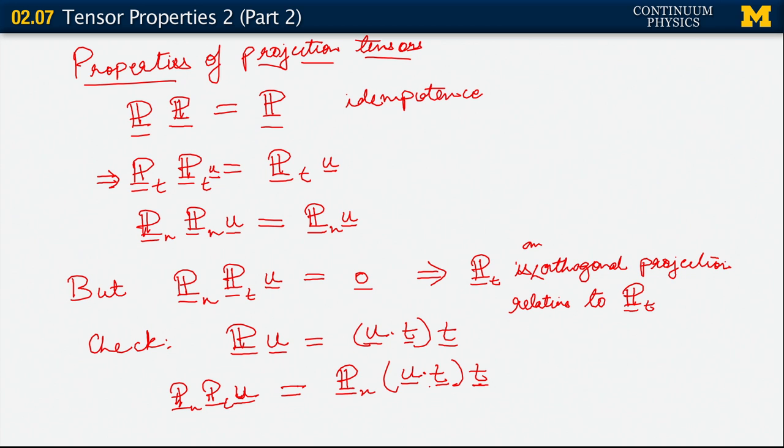P sub n acting on t. Now, u dot t is just a scalar, so it comes out of this calculation. So this is u dot t times P sub n acting on t.